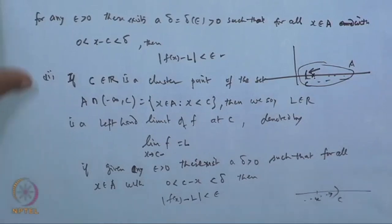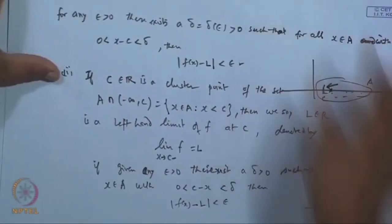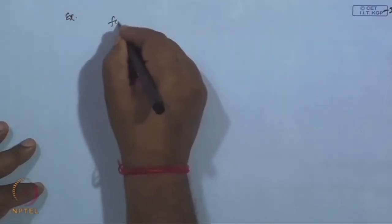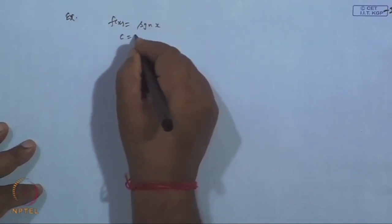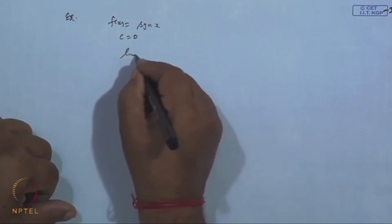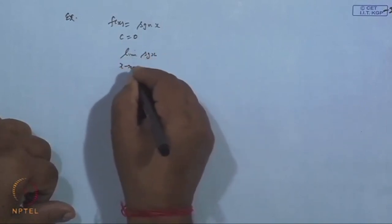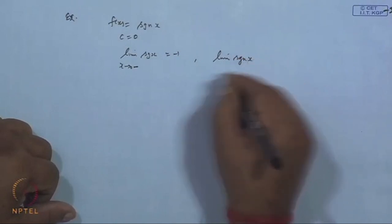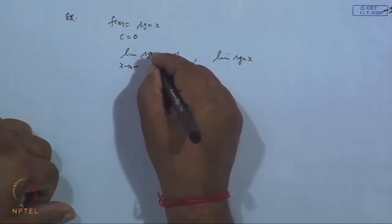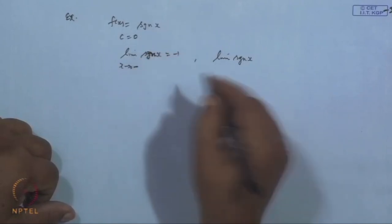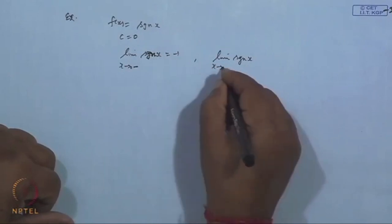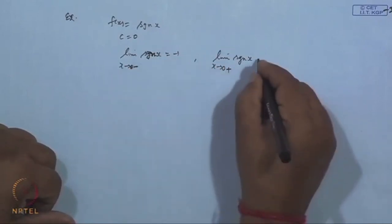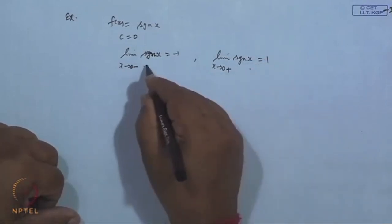So the left-hand and right-hand limits are defined this way. For example, if we take f(x) = sgn(x) and c = 0, then lim(x→0⁻) f(x) = −1 and lim(x→0⁺) f(x) = +1. This is the right-hand limit and left-hand limit for the signum function.